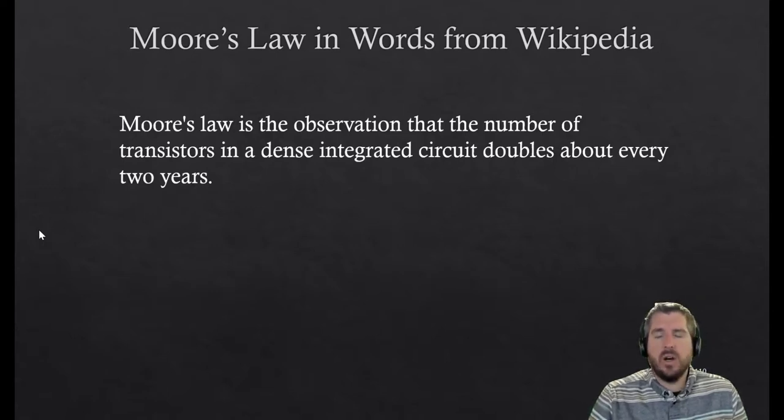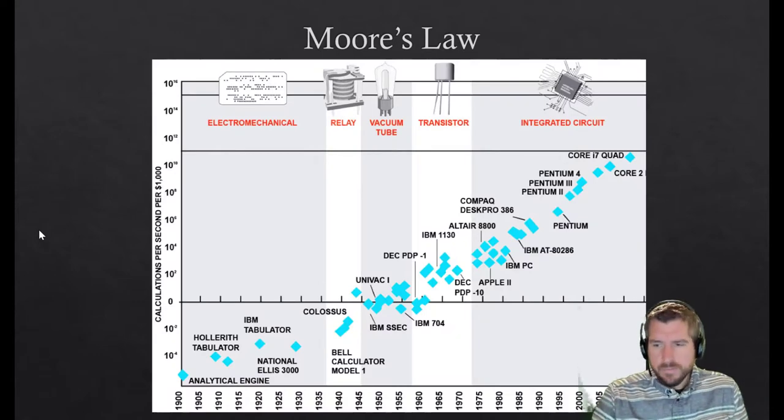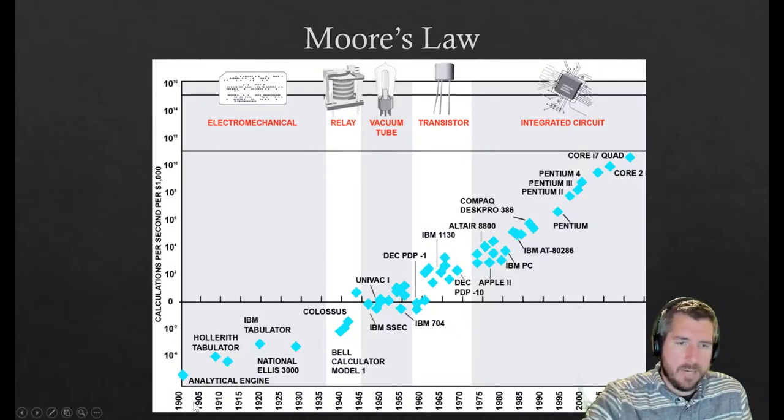Transistors are really the heart of any computer. The number of these little transistors in a really dense circuit or really dense computer chip doubles about every two years. What are the implications of that? If we look on the bottom is years. On the left-hand side, this is big.